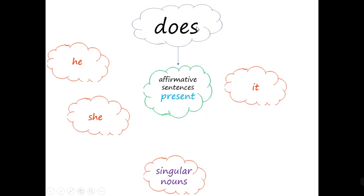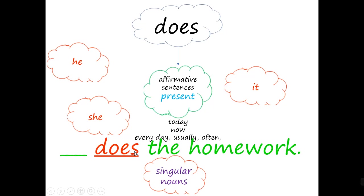Next: "does." Again for affirmative sentences in the present — with the same time words: today, now, every day, usually, often. But in this case the pronouns change. This is the third person singular: he, she, it, or singular nouns. For example: he does the homework, she does the homework, it does the homework. Obviously an animal cannot do homework, but we can use it. Or a singular noun: my mom does the homework, my father does the homework, my friend does the homework. With a singular noun we use "does."